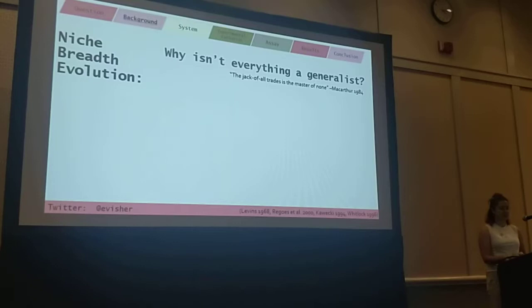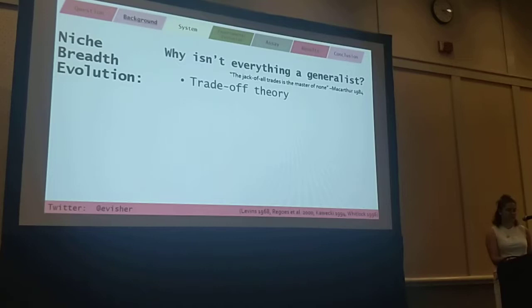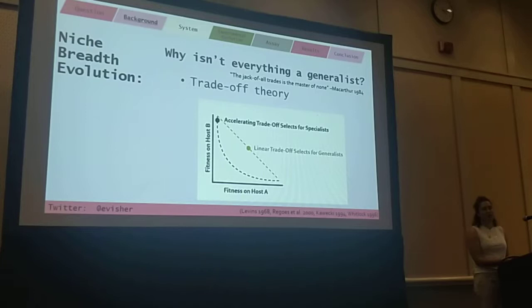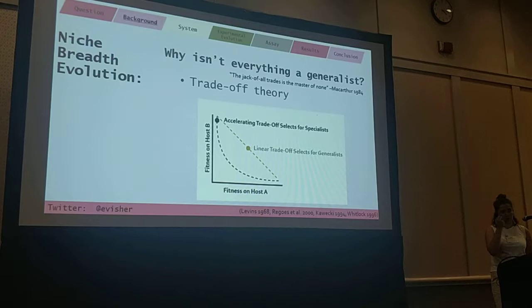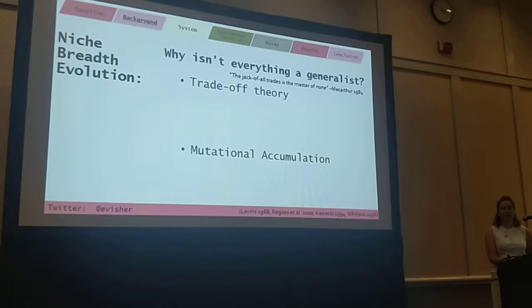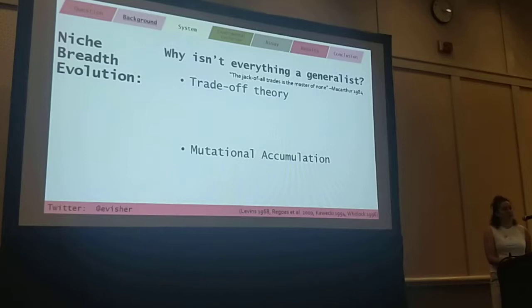This phenomenon of mediocre generalists could arise from a number of mechanisms. The first is the trade-off theory proposed by Levins in 1968, which argues there are direct correlations between fitnesses on different environments, such that an increase in fitness on one environment comes at a cost of decreased fitness on another. This has been applied to host-parasite evolution, showing that the shape of the trade-off, the type of heterogeneity, and the degree of mixing between host types can all affect whether a heterogeneous host population selects for specialists or generalists. The second is the mutation accumulation theory by Whitlock and Kuecki, arguing that generalists are less able to retain their genetic quality across all environments in the face of deleterious mutation pressure.